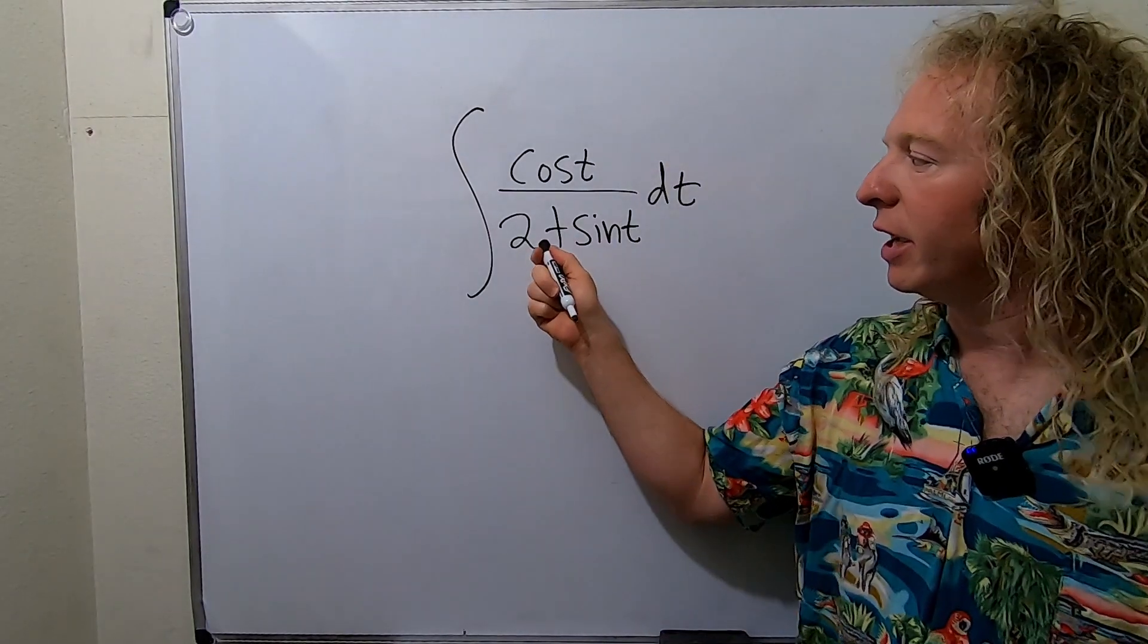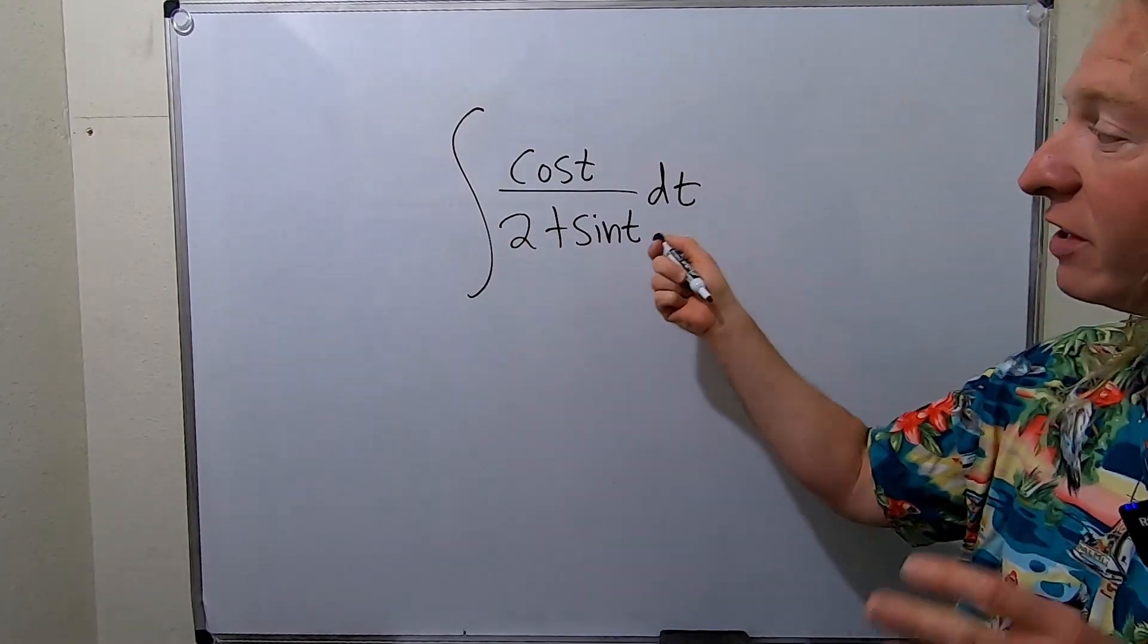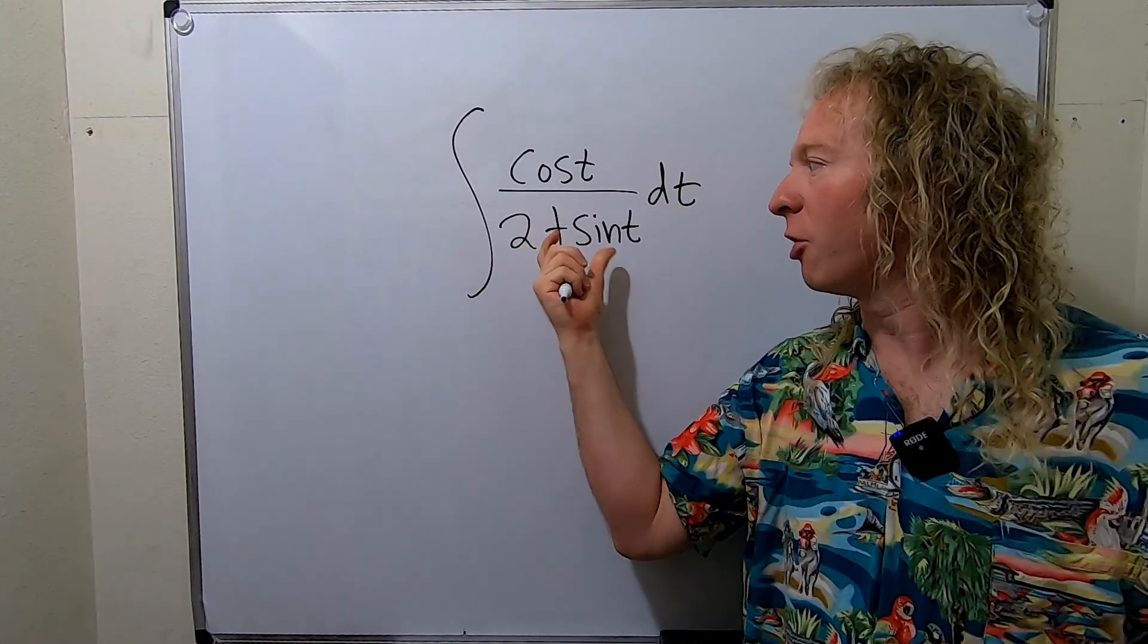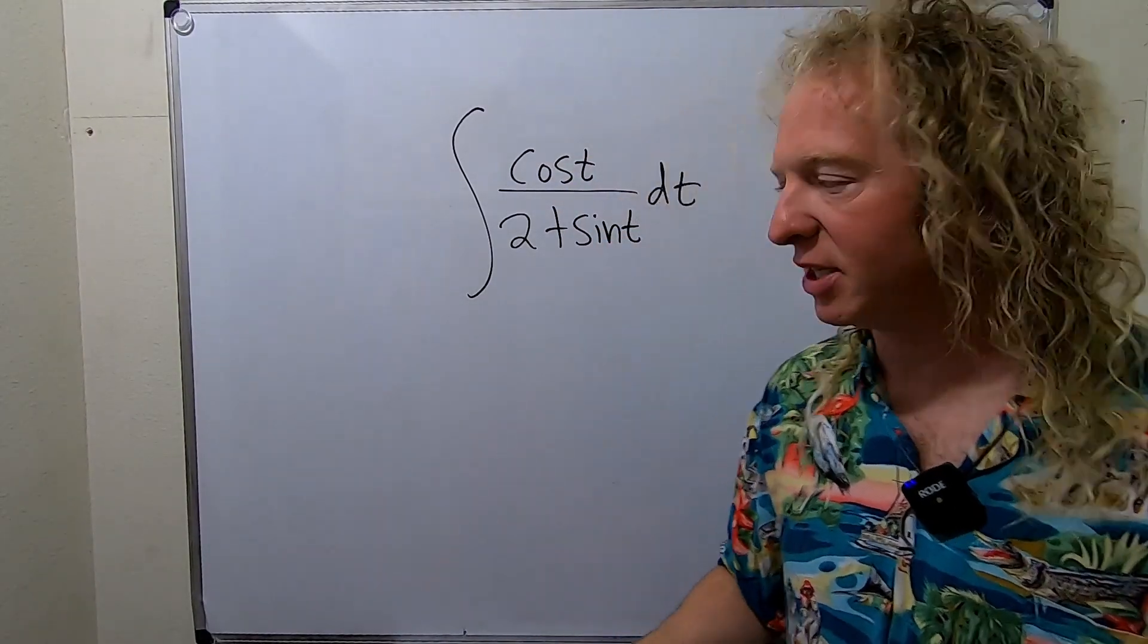You'll notice right away, if we let u be the piece on the bottom, the derivative of 2 is 0 and the derivative of sine is cosine. So if we call the bottom piece u, our du is going to be up top. So let's go ahead and try that and see how it works out.